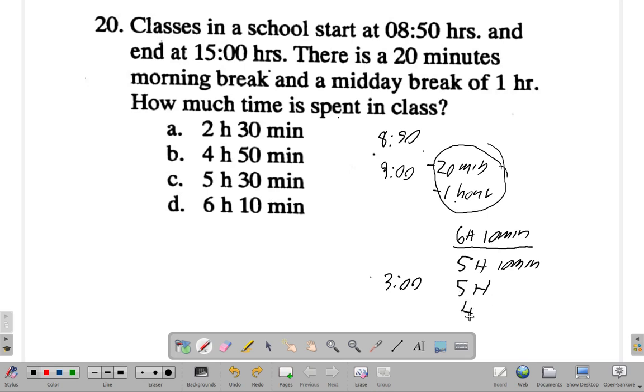So that's four hours and 50 minutes spent in class after looking at nine to three, adding the extra 10 minutes at ten minutes to nine, and taking off the one hour and then taking off 20 minutes. Four hours and 50 minutes, so our answer is B for number 20.